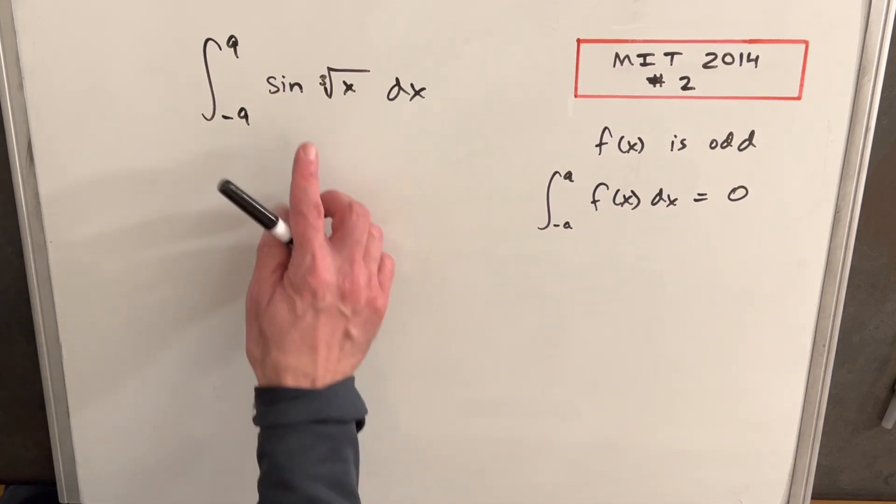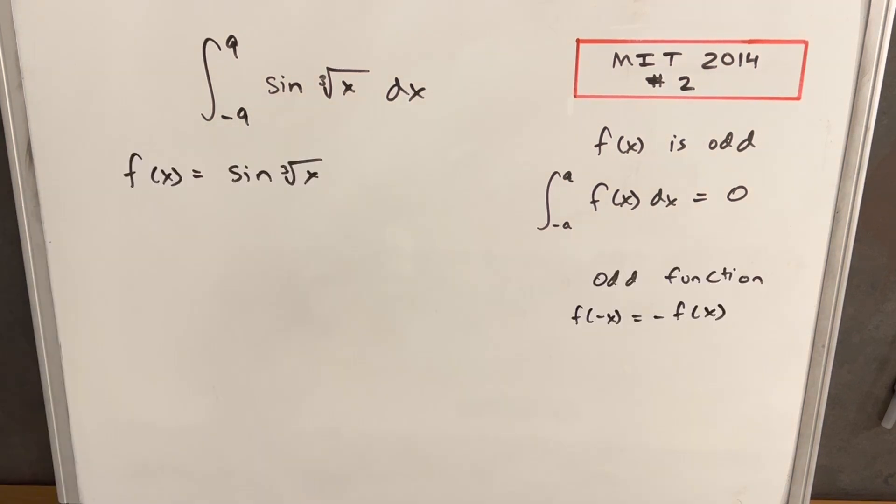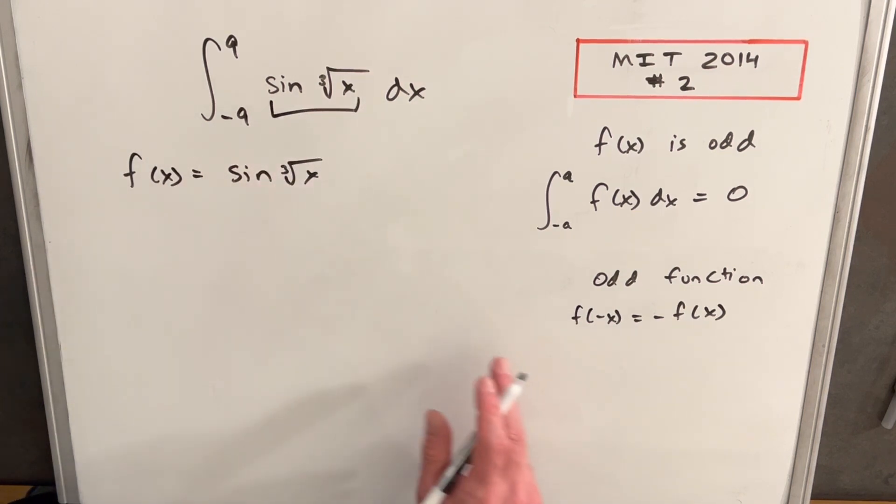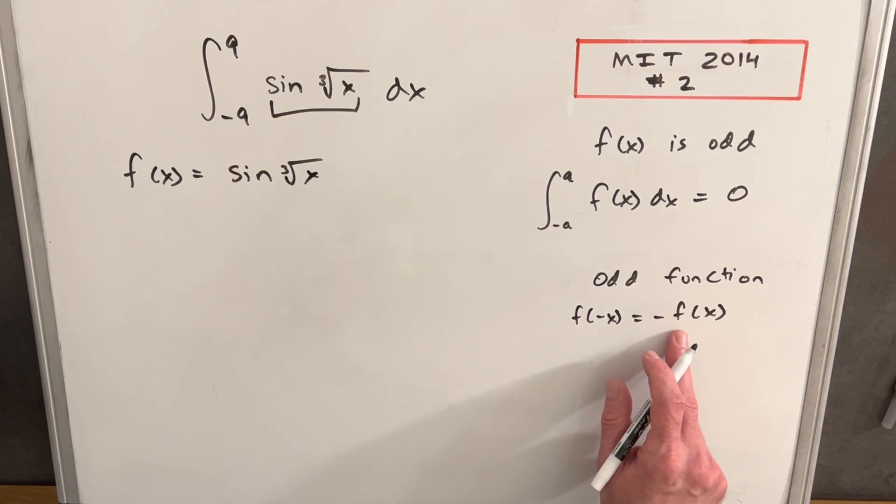So all we really need to do here is we just need to show that this is odd. What I'm doing is I'm just going to set the whole thing as our f of x, and our definition over here on the right of an odd function is if we have f and the input's negative x, then we should just get back negative f of x.